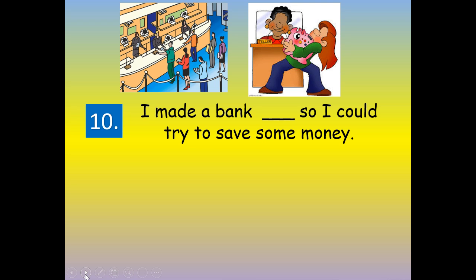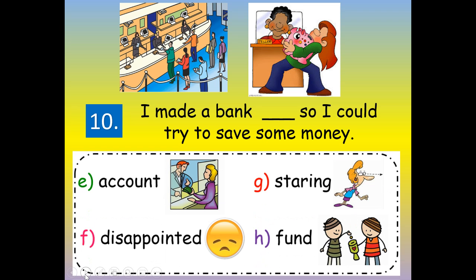Number ten: I made a bank blank so I could try to save some money. A bank account... bank disappointed... bank staring... or a blank fund. Account — I made a bank account so I could try to save some money. A-C-C-O-U-N-T, account.